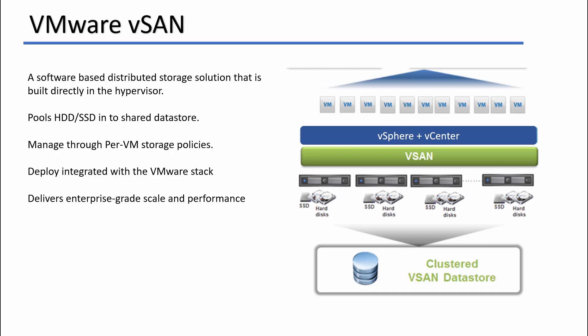vSAN pools hard disks — flash or magnetic — into a shared datastore by aggregating all storage devices attached to the ESXi hosts. For example, if you have three ESXi hosts and each has two 10 GB hard disks, the total capacity is 60 GB. When you create a vSAN cluster datastore, you get a 60 GB clustered vSAN datastore — all local attached storage is aggregated into a single shared datastore.